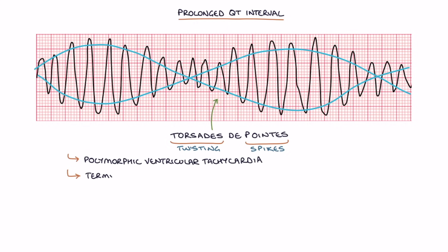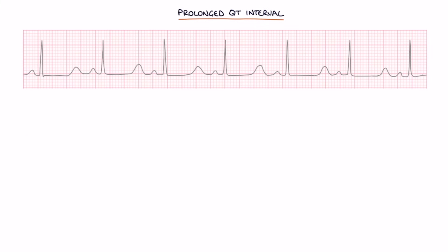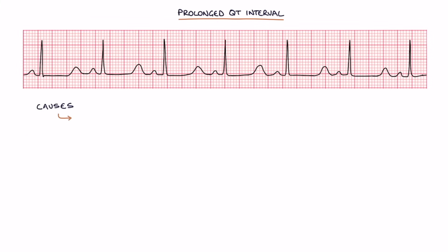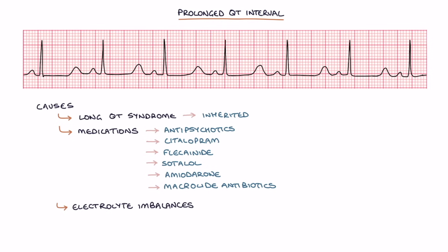Torsade de pointes will either terminate spontaneously and revert to sinus rhythm, or progress to ventricular tachycardia, which can lead to cardiac arrest. Causes of a prolonged QT interval include long QT syndrome, an inherited condition; medications such as antipsychotics, citalopram, flecainide, sotalol, amiodarone, and macrolide antibiotics; and electrolyte imbalances such as hypokalemia (low potassium), hypomagnesemia (low magnesium), and hypocalcemia (low calcium).